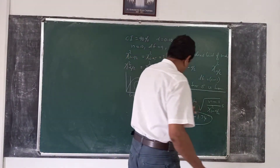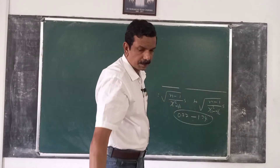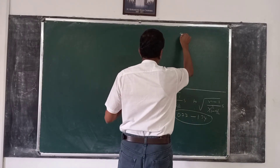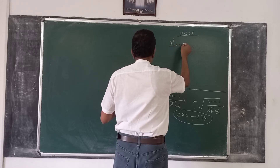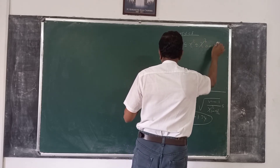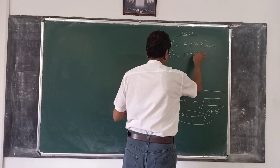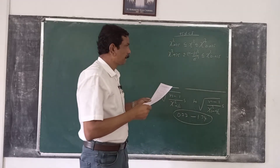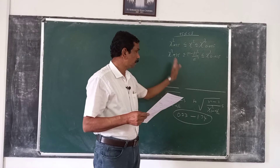Let me explain how we obtain this a little more mathematically. To explain this, consider the 95 percent confidence interval: chi-square (0.975) less than or equal to chi-square, less than or equal to chi-square (0.025). Substituting chi-square equals (n minus 1) times s-squared divided by sigma-squared, we use the fact that 95 percent of chi-square values lie between these two intervals, from the property of the chi-square distribution.